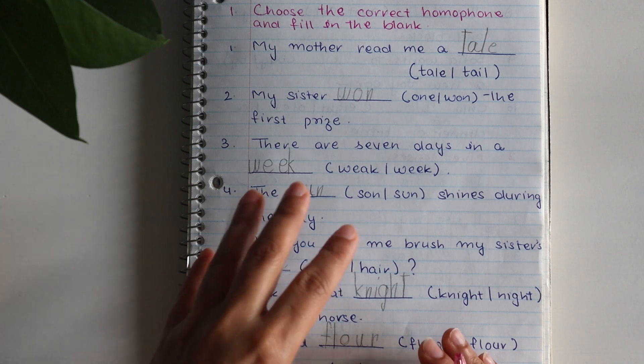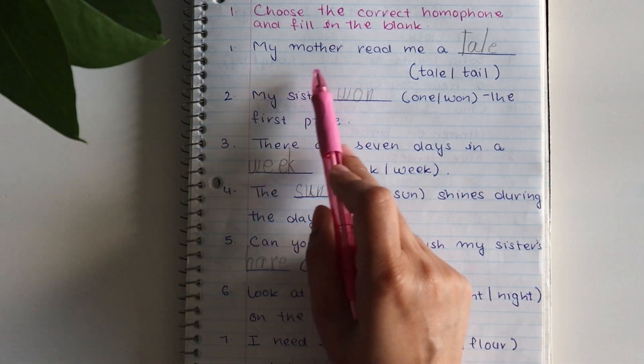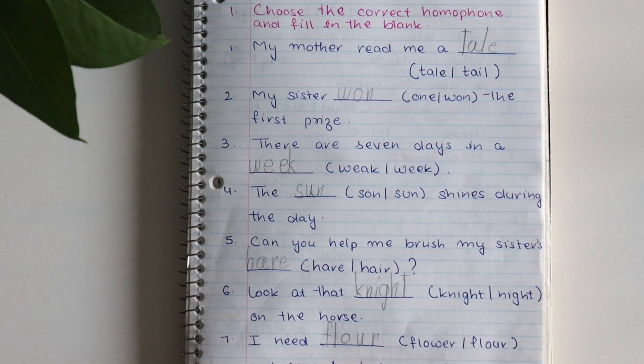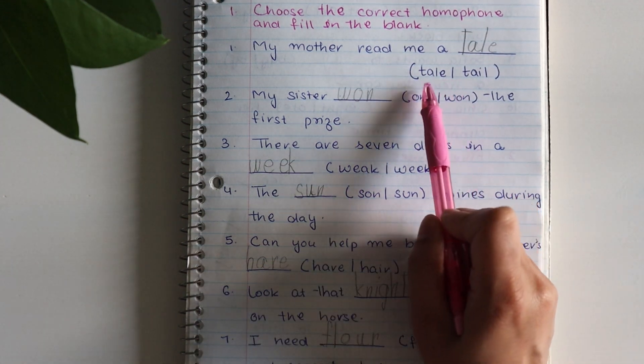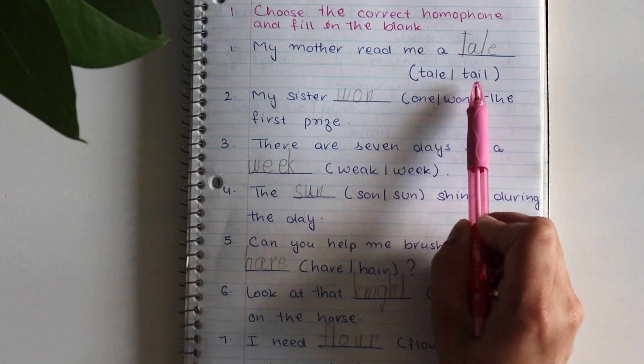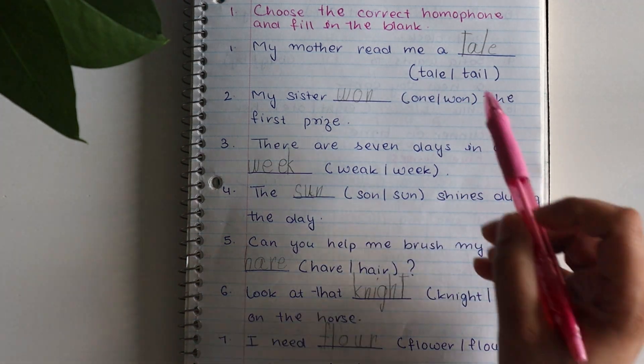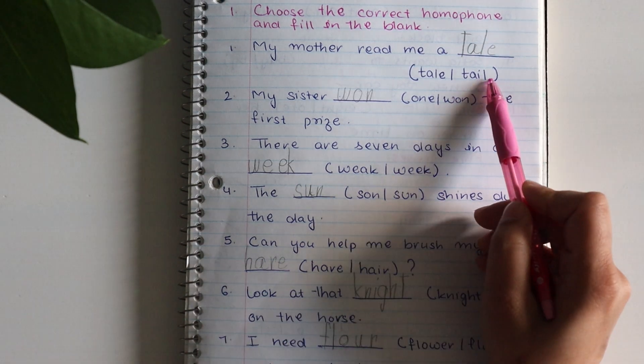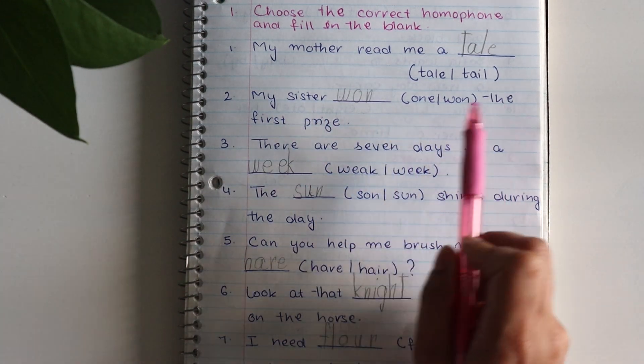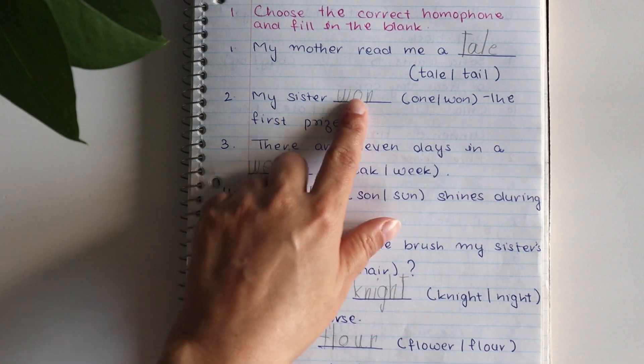For example, if I take the first example here, my mother read me a blank. So there are two options below: T-A-L-E tail and T-A-I-L tail. This is also a tail, this is also a tail. Both are the same but the meaning of both is different. This tail is like a story and this will be like an animal tail. Second, we have my sister blank the first prize. Now, W-O-N won, so the right answer is won.